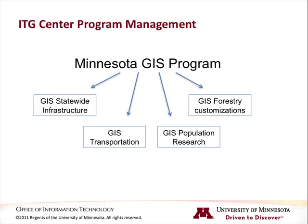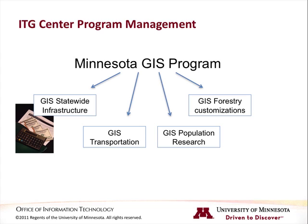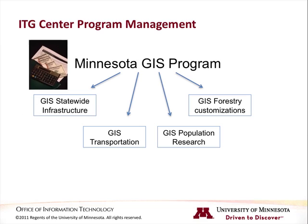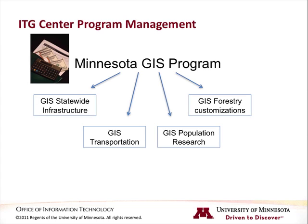In our example Minnesota GIS program, the manager will want to be aware, for example, that purchasing delays have extended the timeline for the statewide GIS infrastructure project. The change in timeline for this project directly impacts the other three projects. In ITG Center, the purchasing issue that occurred in one project can be escalated to the program so that the manager can work to mitigate its impact on the other three projects and the program as a whole.